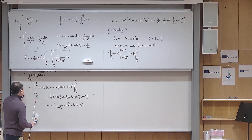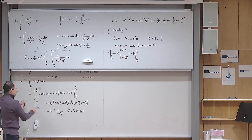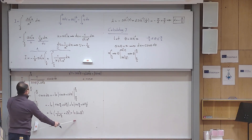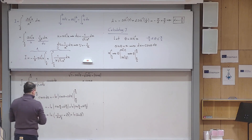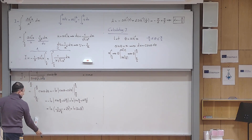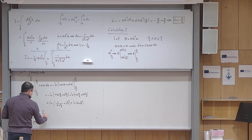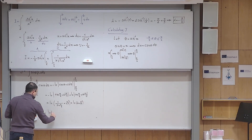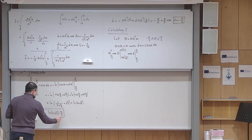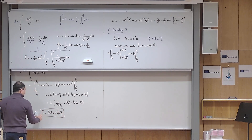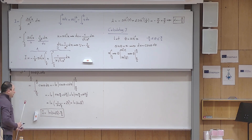We found that J equals ln of 2 plus square root of 3, and A equals negative pi/6. So the whole integral is A plus J, which equals ln of 2 plus square root of 3 minus pi over 6. That's exactly the answer.